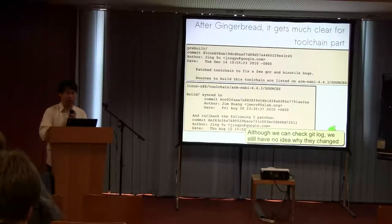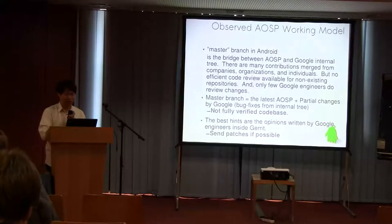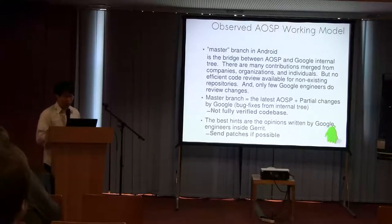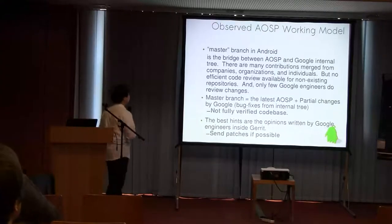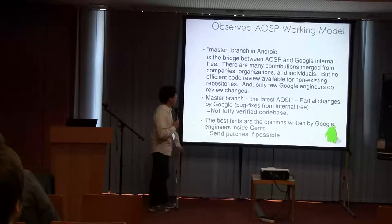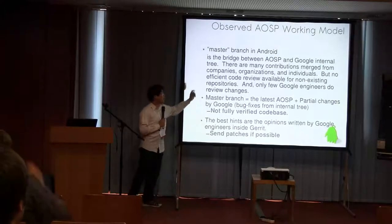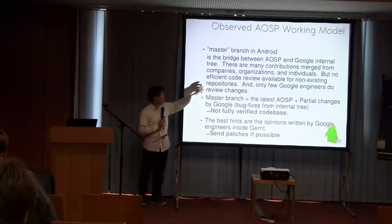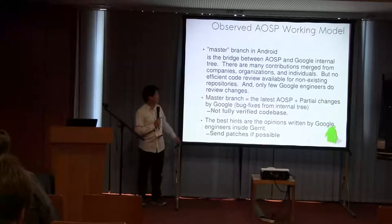That's a problem — it's really hard to work with. In my opinion, the so-called 'master branch' is the bridge between AOSP and the Google internal tree. There are already many organizations and companies contributing their patches, but the problem is that only Google engineers review changes.